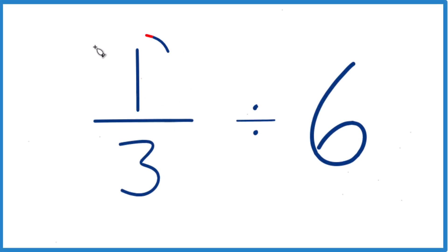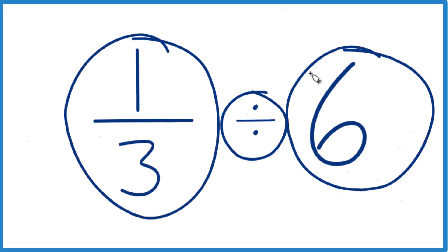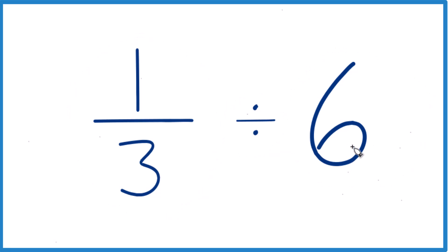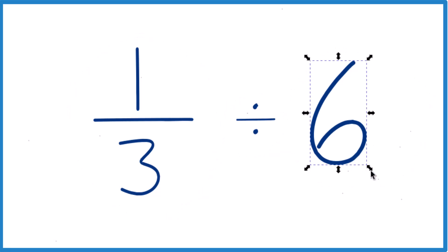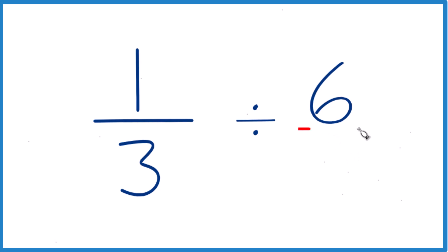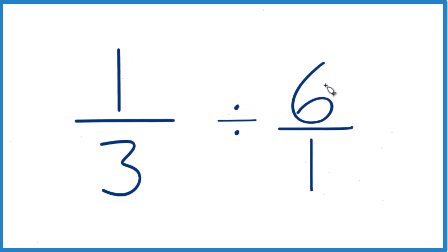In this video, we're going to take one-third divided by six. So the first thing I like to do is take the six here, and instead of six, let's call it six over one. It's still six because we're just dividing six by one, but now things line up a little bit better.